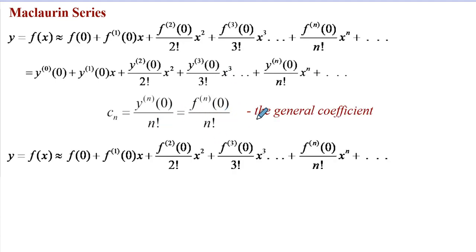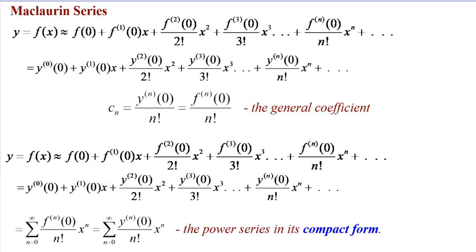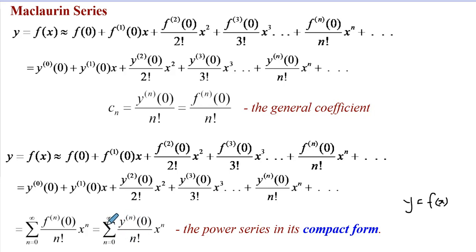We can now also talk of the general coefficient, expressed in terms of n factorial. With the general coefficient established, we can express this in its compact form using sigma notation. The two series — written in terms of f(x) or y — are identically the same as long as y = f(x). It is very important to be able to determine the general coefficient so you can express the power series expansion compactly using the sigma sign.